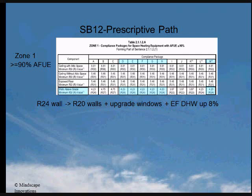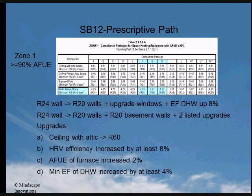For packages F, G, and H, another possible trade-off for the main walls is to increase the basement walls to a minimum of R20 and choose two of the listed upgrades: option A is to increase the ceiling with attic insulation to R60; B is to increase the HRV seasonal recovery efficiency, or SRE, by at least 8 percent; C is to increase the minimum furnace AFUE by at least 2 percent; and option D is to increase the minimum energy factor for the domestic hot water by at least 4 percent.